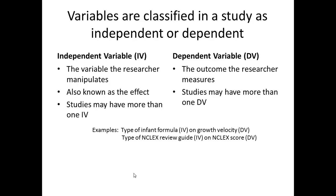For example, let's say that we want to know if different types of infant formula can affect growth velocity in babies. The type of formula doesn't change — it's the independent variable, the one the researcher manipulates. Growth velocity is the outcome, and if our hypothesis is correct, it will depend on the type of formula. It's the dependent variable.